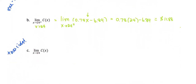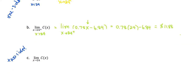In part C, we compute the two-sided limit. The condition for the two-sided limit to exist is that the left-hand limit — the limit of C(x) as x approaches 24 from the left — equals the right-hand limit — the limit of C(x) as x approaches 24 from the right. In parts A and B, they turned out to be the same number, which means the two-sided limit does exist and equals $11.88.